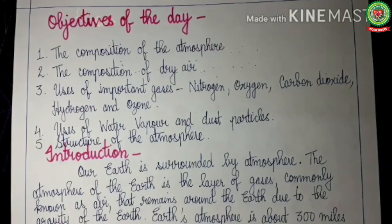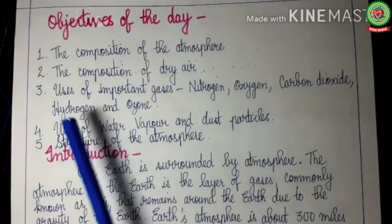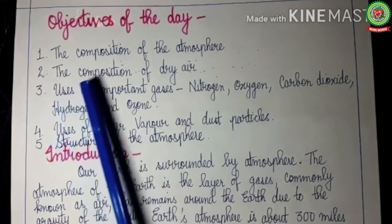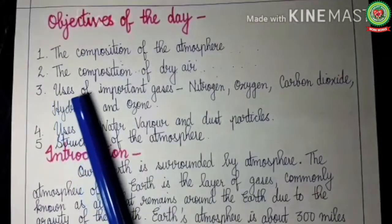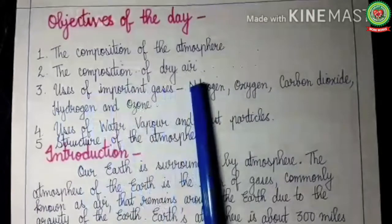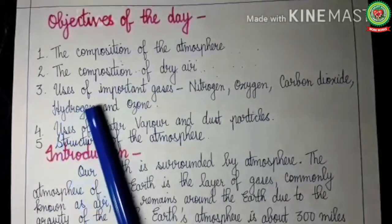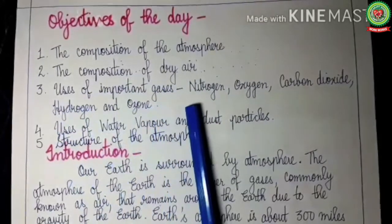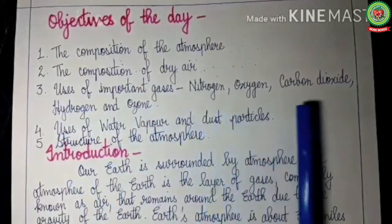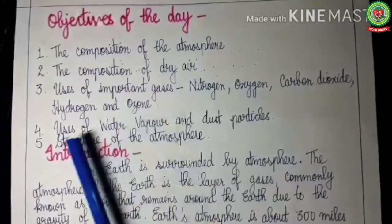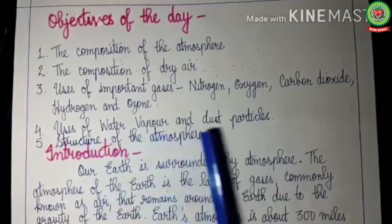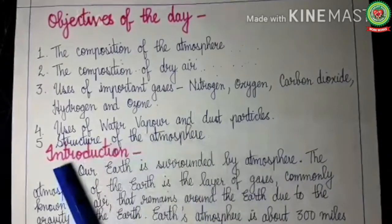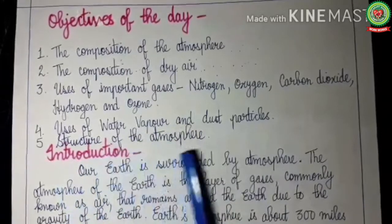The objectives of today's class are: Number 1, the composition of atmosphere. Number 2, the composition of dry air. Number 3, uses of important gases like nitrogen, oxygen, carbon dioxide, hydrogen and ozone. Number 4, the uses of water vapor and dust particles. And lastly, we will discuss the structure of the atmosphere.